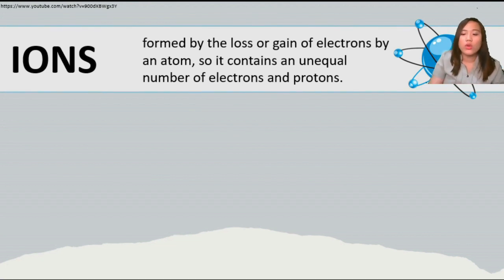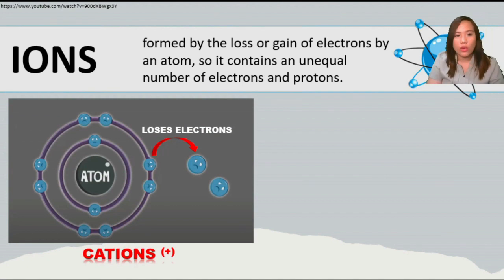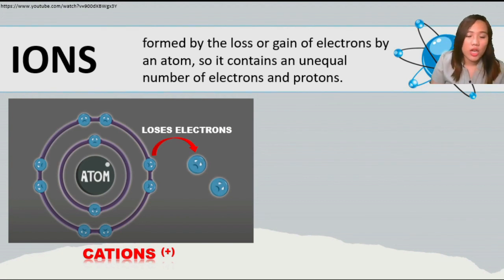First, we have the cation. In cation, whenever an atom loses an electron, it becomes positively charged. So when an atom or element loses electrons, its charge becomes positive, and it is called a cation.